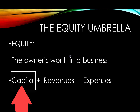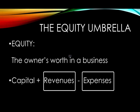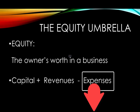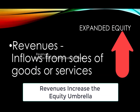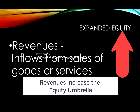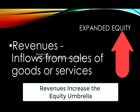The other two components of the equity umbrella are revenues and expenses. In general, revenues cause the equity umbrella to go up and expenses cause the equity umbrella to go down. Providing services to clients starts a stream of revenue for the business. Revenue or income is the inflow of money or other assets that results from the sale of goods or services, and it causes the equity umbrella to go up.